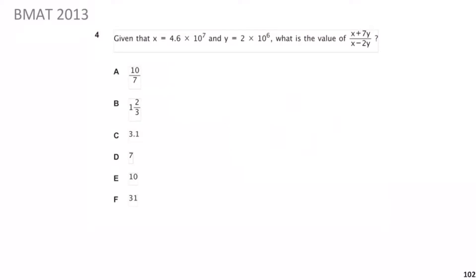Now we move on to BMAT 2013 Question 4. Given that x is 4.6 × 10⁷ and y is 2 × 10⁶, what is the value of (x + 7y) / (x − 2y)? Pause the video, give yourself a minute, then we'll go through the solution.